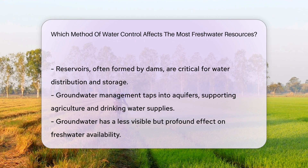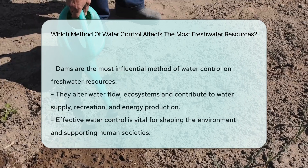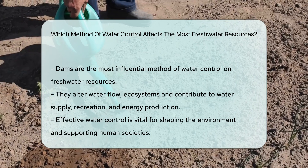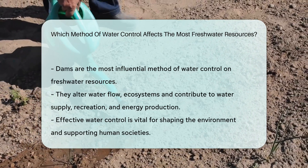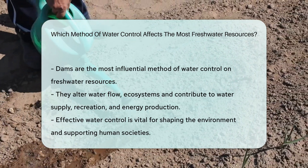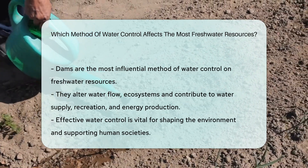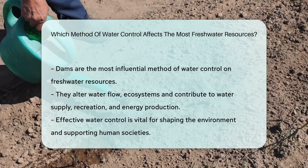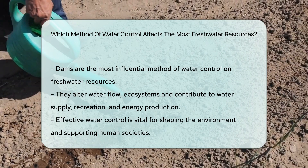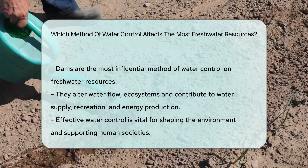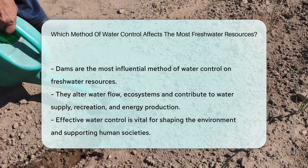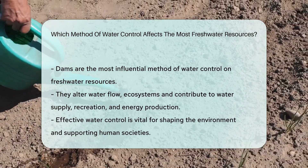Dams affect the most freshwater resources. They have a massive footprint on water systems, altering flow and ecosystems. Their role in water supply, recreation, and energy can't be overstated.